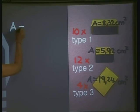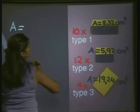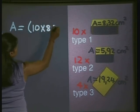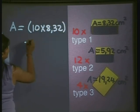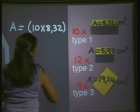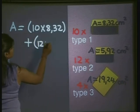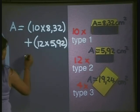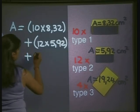Area is therefore equal to 10 times 8.32 plus 12 times 5.92 plus 4 times 19.24.